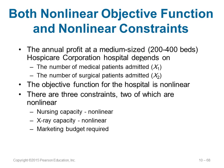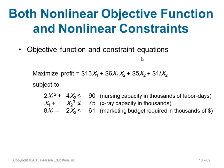Second case: both the objective function and constraints are non-linear. A medical hospital depends on medical patients admitted (x1) and surgical patients admitted (x2). The objective function includes the term 6x1x2, making it non-linear. Two of three constraints are also non-linear: 2x1² + 4x2 ≤ 90 and x1 + x2³ ≤ 75. The third constraint is linear. This type of fully non-linear problem can also be solved using software tools.